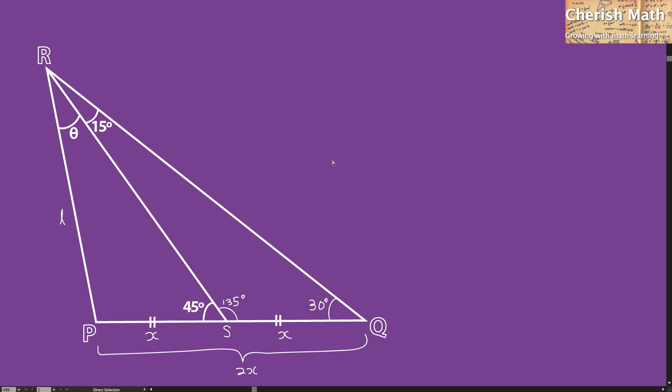By referring to triangle PRS, I'm going to use the sine rule. That is sine theta divided by X equals sine 45 degrees divided by L. Theta is opposite the length X, and 45 degrees is opposite the length L.